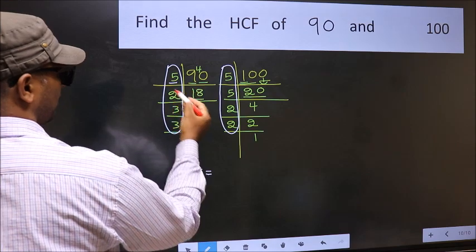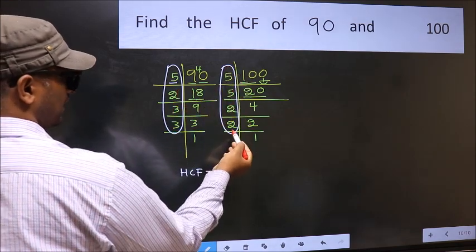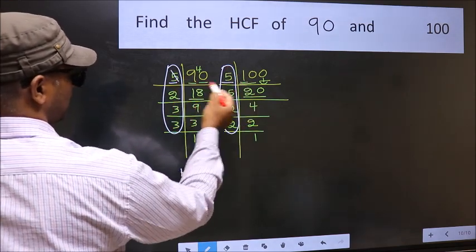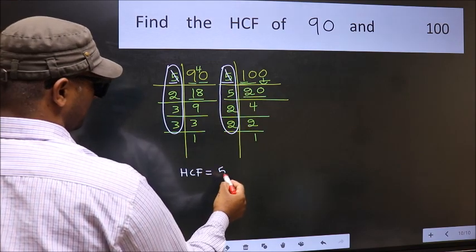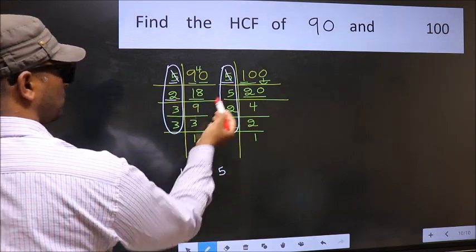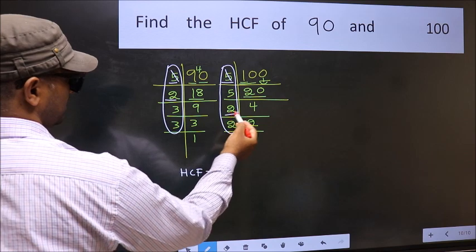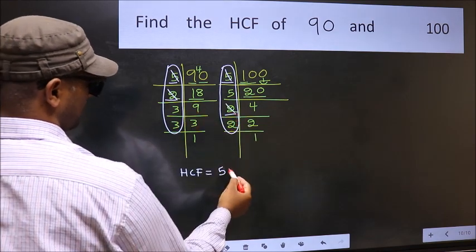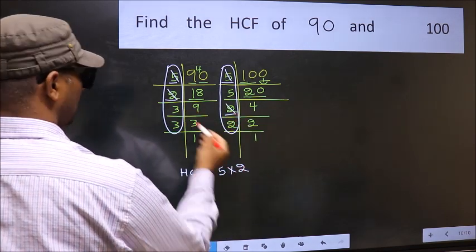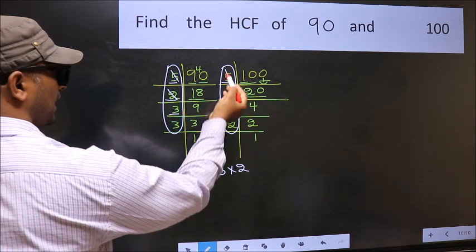Starting with the number 5. Do we have 5 here? Yes. So cut 5 right here. Next number 2. Do we have 3 here? No. Next number 3. Do we have 3 here?